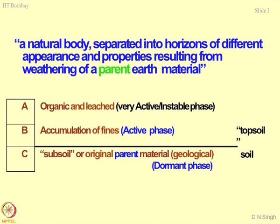The categories A, B, and C describe the soil layers. The topmost surface has organic and leached material. This soil is supposed to be very active and at the same time very unstable — a hyperactive material. Why? Because this material happens to be interacting quite a lot with the environment. This is the topmost layer which is exposed directly to the environment, and the basic attributes we are referring to are temperature, pressure, humidity, and any other activity, manmade or natural.